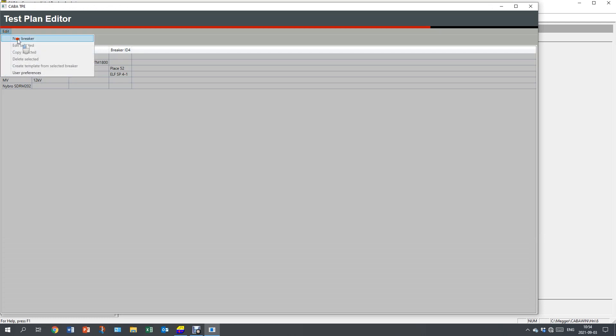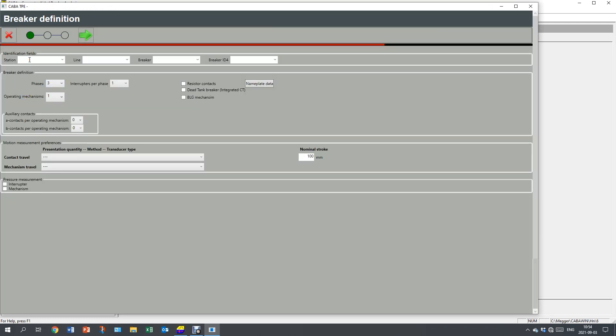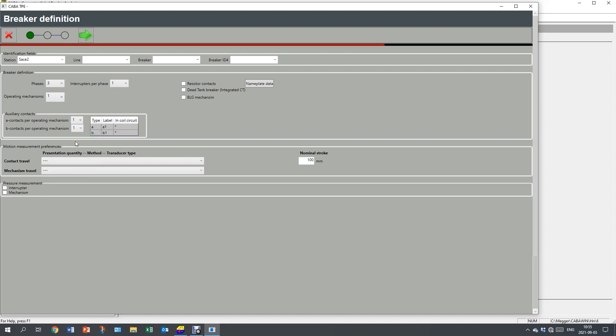I create a new breaker, give it a name. I have one interrupter per phase. One mechanism. I want to measure auxiliary contacts and I want to measure contact travel.